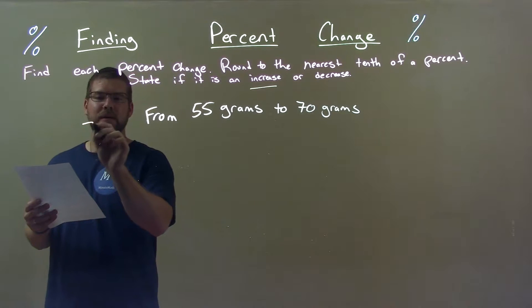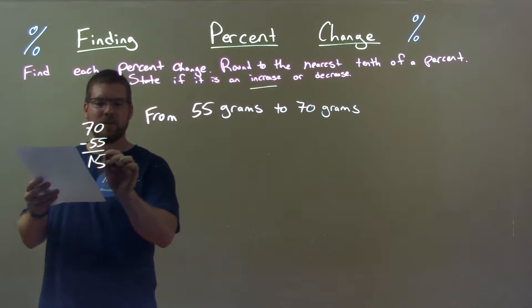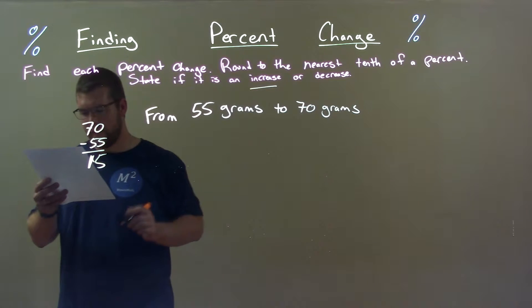Now, difference between the two. 70 minus 55 comes out to be a good old 15. That's a one right there, 15.